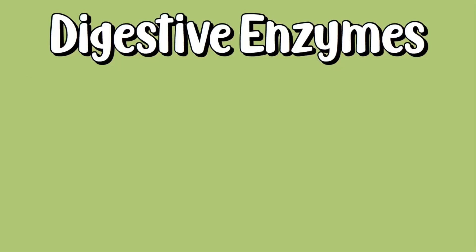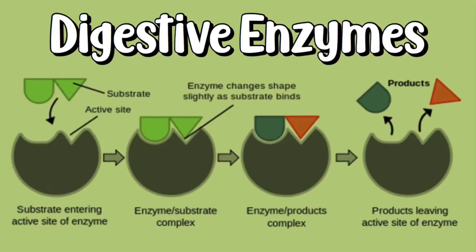Now let's look at digestive enzymes, which break down molecules. First, the substrate enters the active site and it binds with the enzyme. The enzyme will then break down the substrate into two different products, and these products will leave the enzyme's active site.